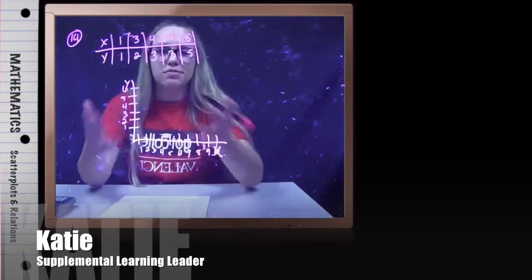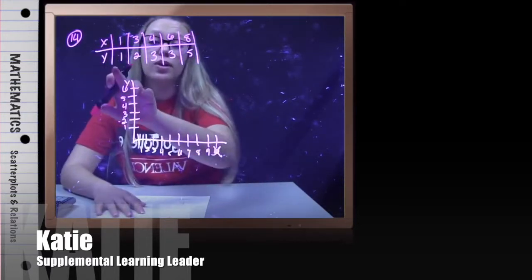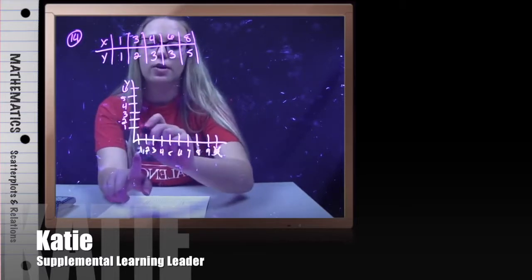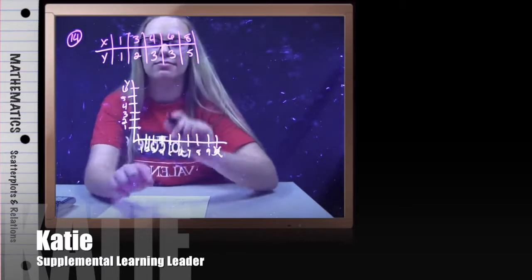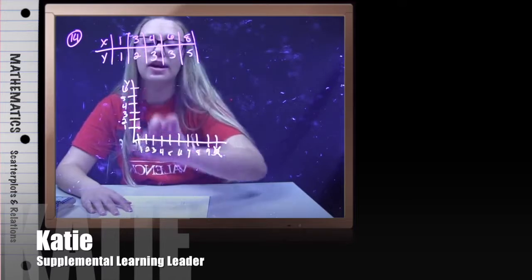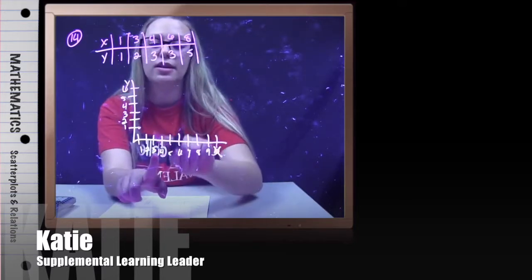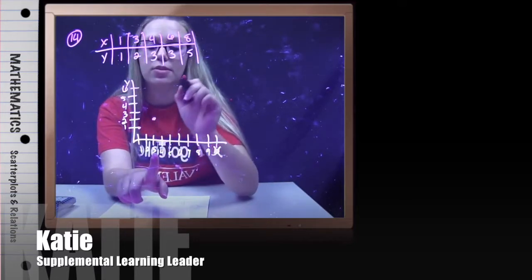And then we're just going to start placing points. So when x is 1, y is 1, so 1-1, we put a dot. Where x is 3, y is 2, so I'm going to go over to 3, up 2, and put a dot.